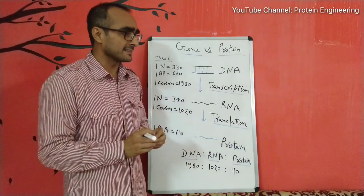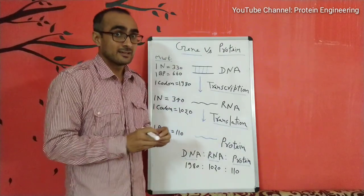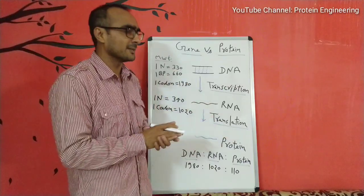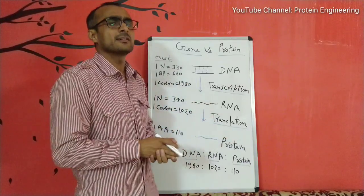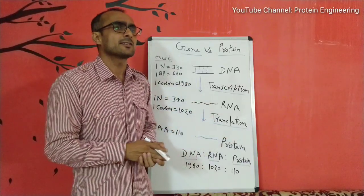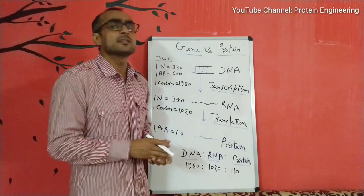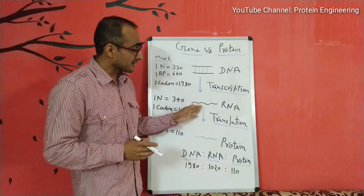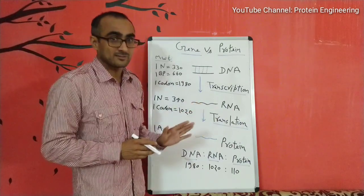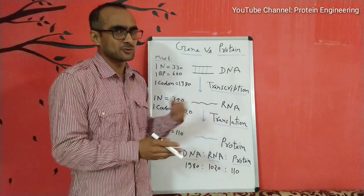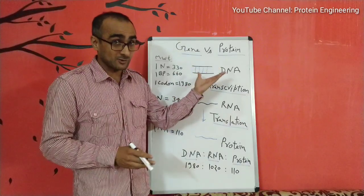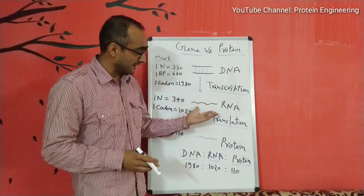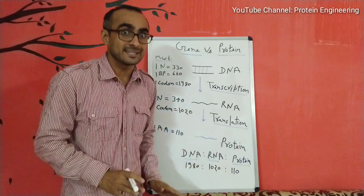A gene is basically a segment of DNA which encodes for an RNA. That RNA may be messenger RNA, transfer RNA, ribosomal RNA, or any other kind of small RNA. If it's a messenger RNA, it is translated into protein form. Today we will talk about how mass changes when a gene — a segment of DNA — is finally converted into its product RNA and eventually into protein.